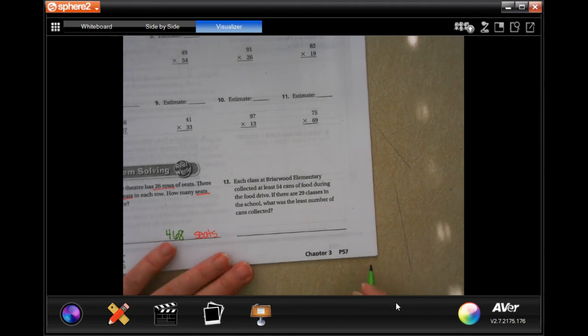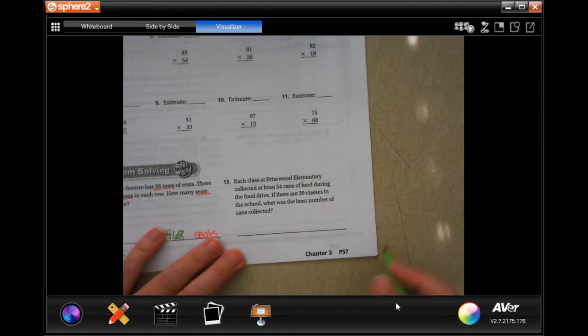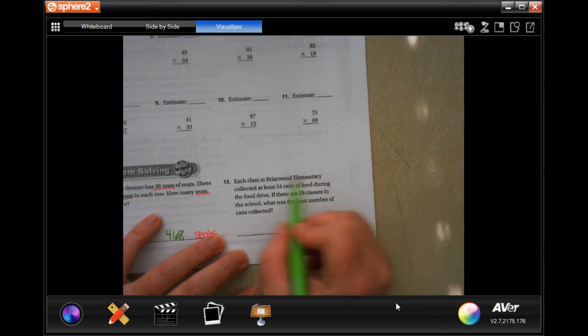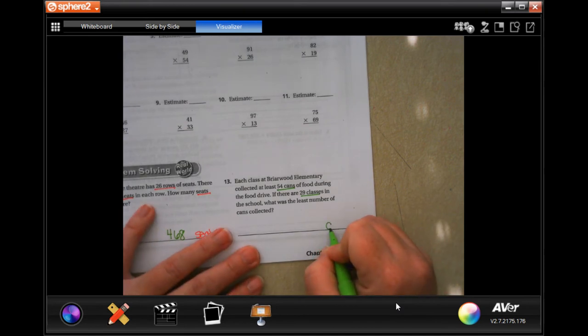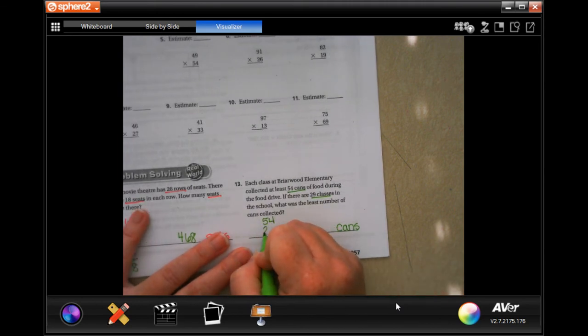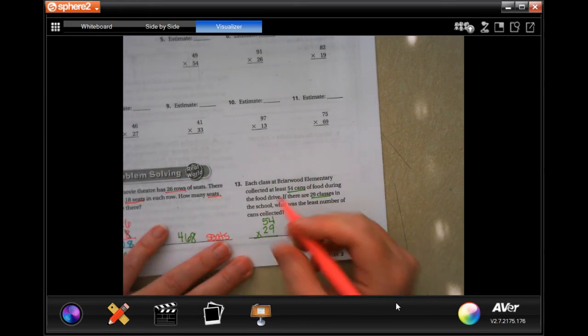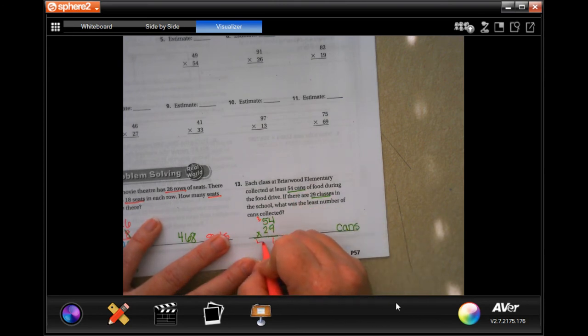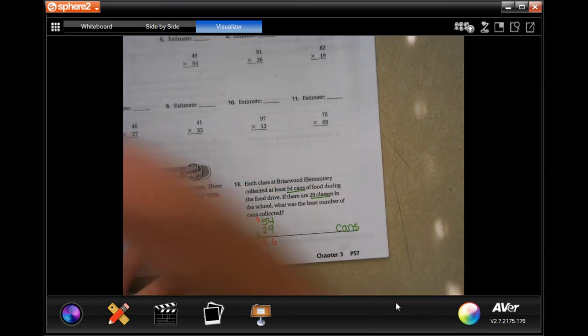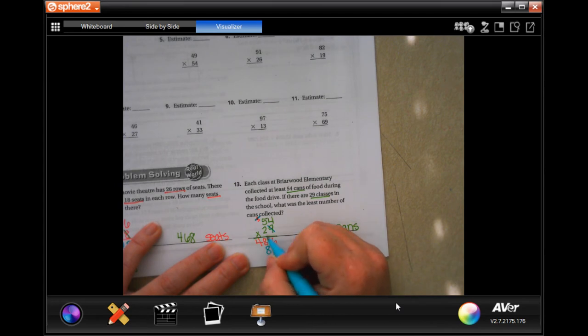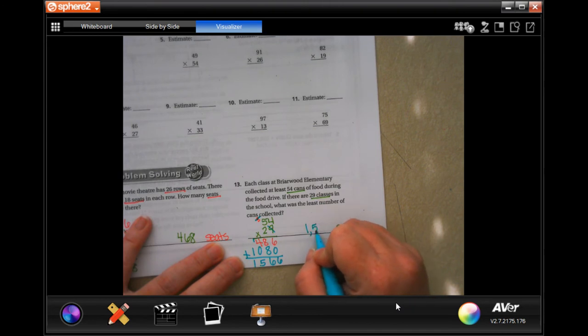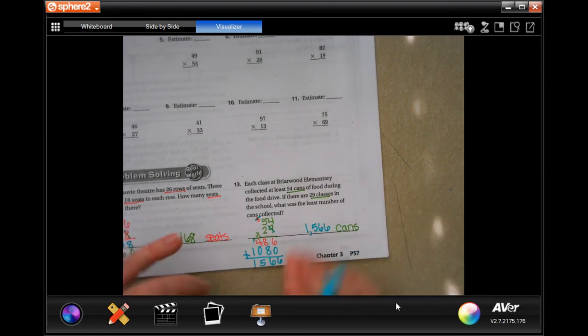Each class at Briarwood Elementary collected at least 54 cans of food during the food drive. If there are 29 classes in the school, what's the least number of cans collected? So 54 cans, 29 classes. And whatever it is, it's going to be in cans. So 54, 29, multiply. Let's go. Nine times four is 36. Six down. Carry that three. Nine times five is 45, plus three is 48. We're going to go back through and we're going to go tic-tac-toe. Two times four is eight. And two times five is 10. Add them up. Six, 16. Carry a one. One plus four is five. And one. So, 1,566 cans.